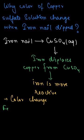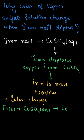We can write the equation as: Fe (solid) + CuSO₄ (aqueous) → FeSO₄ (aqueous) + Cu (solid). So this is the answer to the question. I hope you understood the explanation — thank you so much.